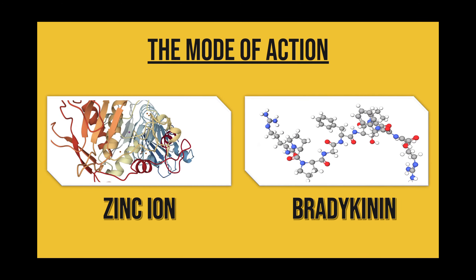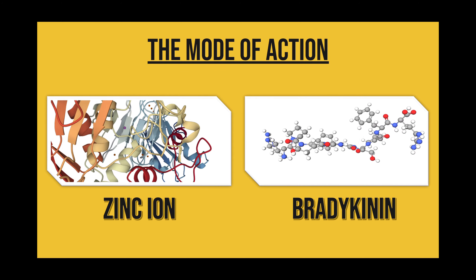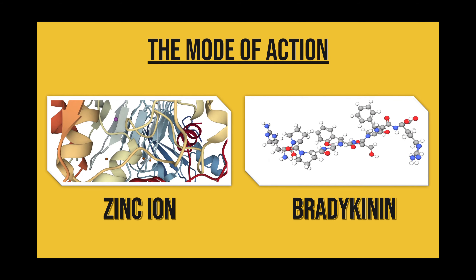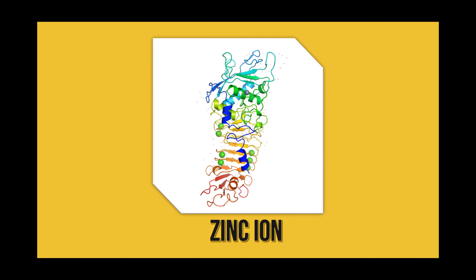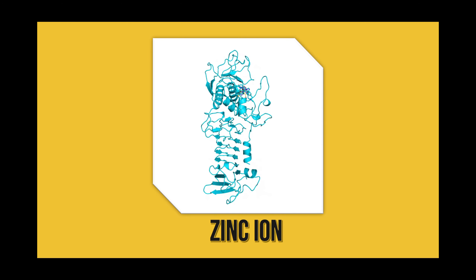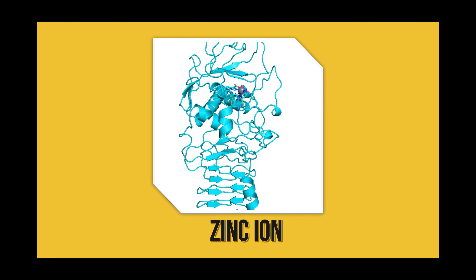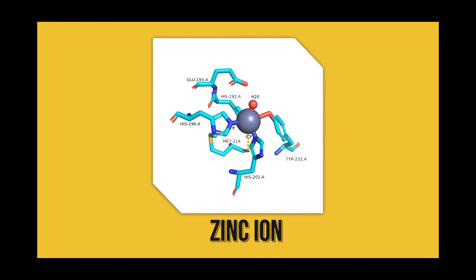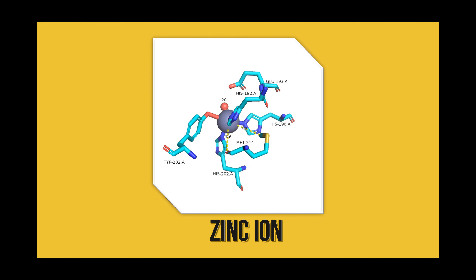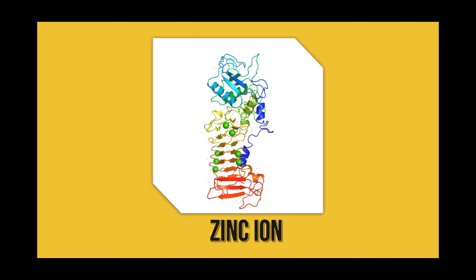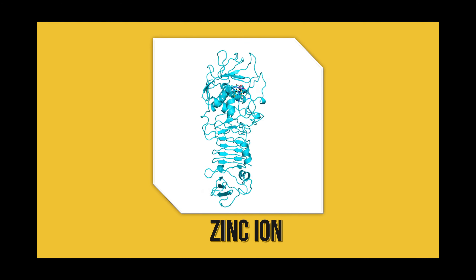For serratiopeptidase, the most important cofactors consist of zinc ions and proteolytic activity. Serratiopeptidase has bivalent cations like zinc and calcium as essential cofactors within their structures. However, only a catalytic zinc ion located in the N-terminal proteolytic domain is essential for its enzyme activity. Another calcium ion in the C-terminal is not essential for enzyme activity, but it is necessary to protect it from autolysis.